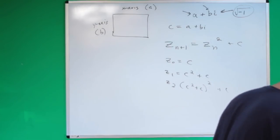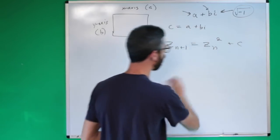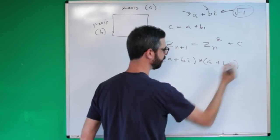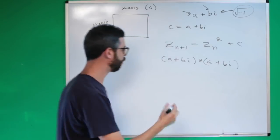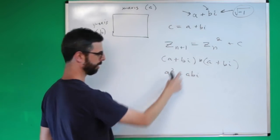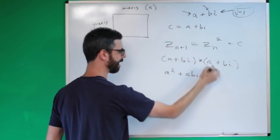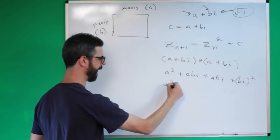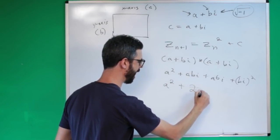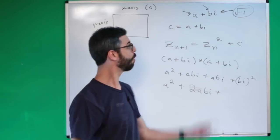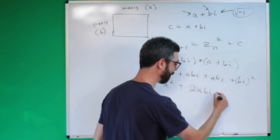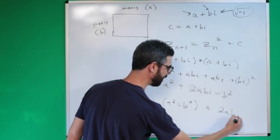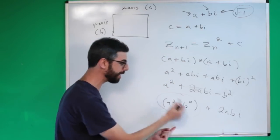Now one thing we need to know — and I'm doing this again because I think it's worth it — is how to take a complex number a plus bi and square it. If we take a plus bi squared, that's a plus bi multiplied by itself, we get a squared plus abi, then a times bi which is abi, plus bi squared. This turns out to be a squared plus 2abi plus b squared times i squared.